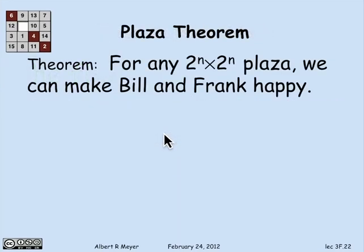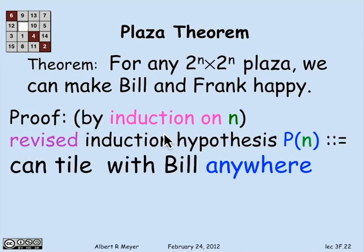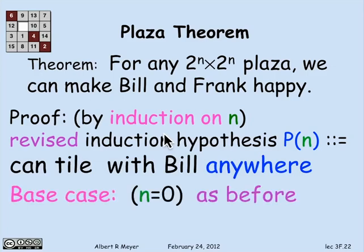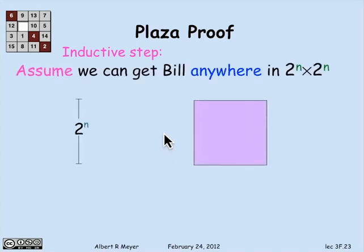Let's do it with the stronger induction hypothesis. The theorem is again: for any 2 to the n by 2 to the n plaza, we can make Bill and Frank happy — proved by induction on n. But with the revised induction hypothesis P(n): I can tile the square with Bill anywhere. The base case n equals 0 is the same as before — it's just one by one, so Bill goes in the only tile, which is both middle and corner and everything else.